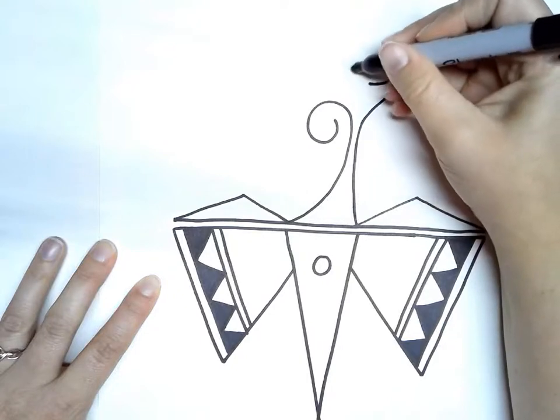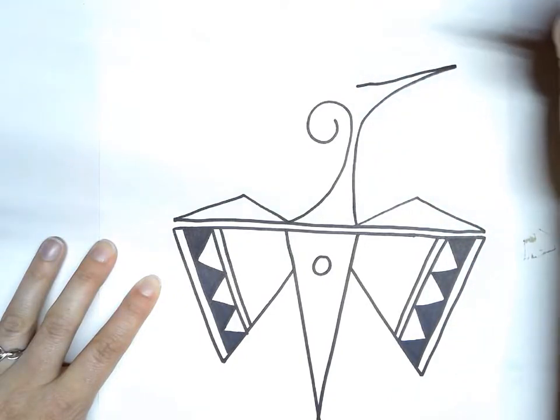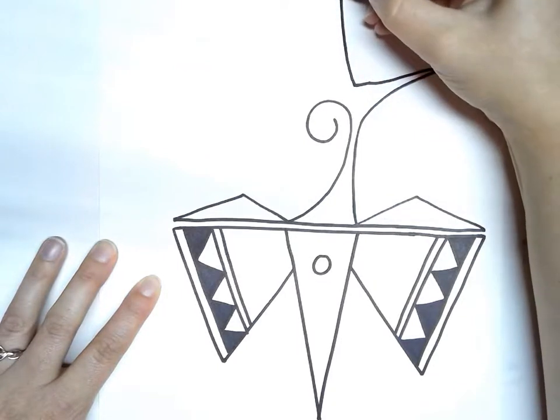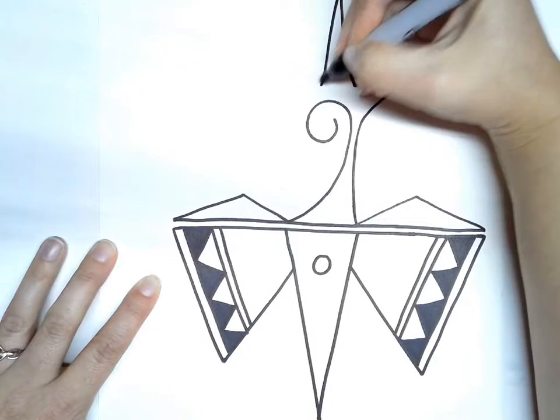And then the next one is going to go straight up. We're going to make this come in a little bit further. And then we're going to make this one go up and do the same thing like a long skinny triangle point.